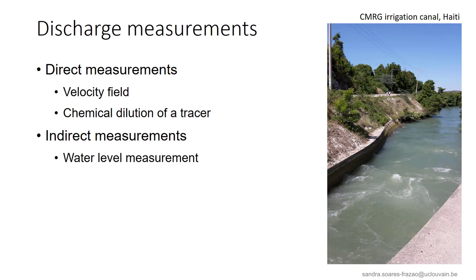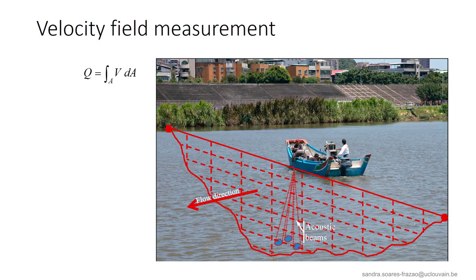This estimation of a discharge leads us to discharge measurements. How are these achieved? We will see that there are basically two types of methods. Direct measurements of variables that are directly related to the discharge, and indirect measurements of auxiliary quantities that can be linked to the discharge through a physical relation.